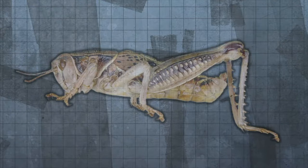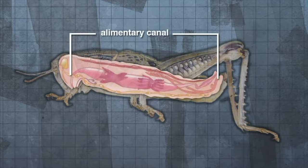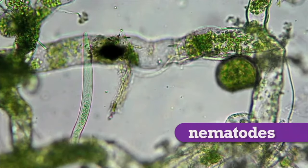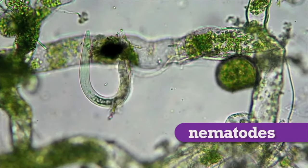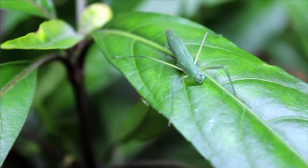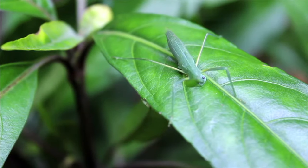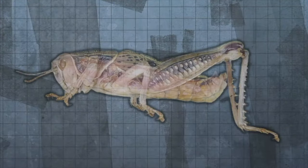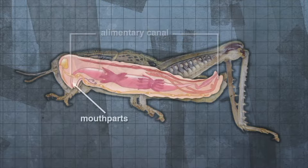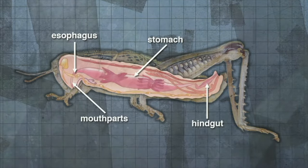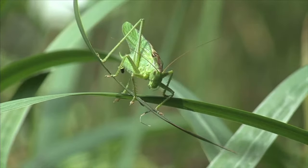From the gastrovascular cavity evolved the alimentary canal, a one-way digestive tract with two openings. Scientists believe that the first animals to have the alimentary canal were microscopic worms called nematodes. From nematodes, the alimentary canal evolved, resulting in many different types of digestive tracts. Arthropods are invertebrate animals whose digestive functions take place in specialized cavities connected to form a continuous canal. The alimentary canal includes a foregut consisting of the mouth parts and esophagus, the midgut or stomach, and the hindgut where undigested food is excreted through the anus as feces.